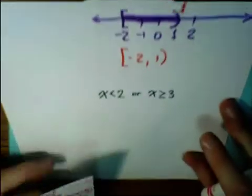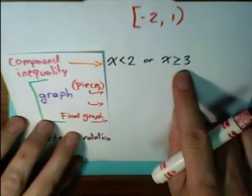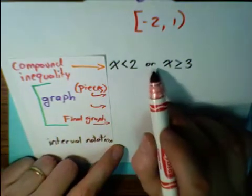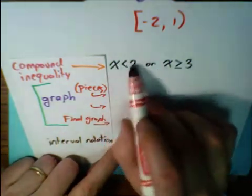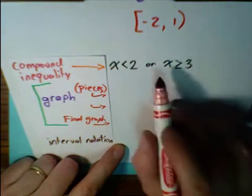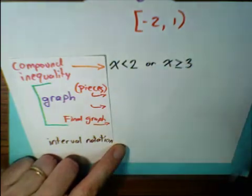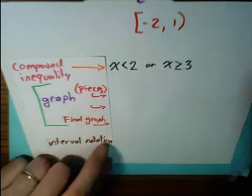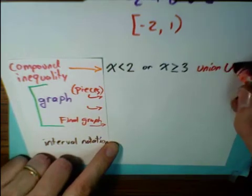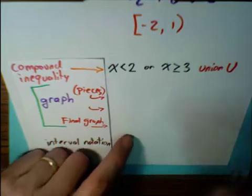Let's take a look at another example. Again, we're starting with a compound inequality, and this compound inequality has an 'or.' That means I'm taking all shaded pieces — if a point is in one or the other, I want both of them. So in this case, this is a union. Let's write this in pieces.